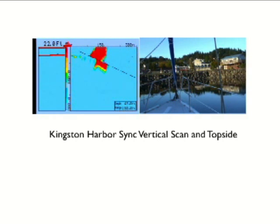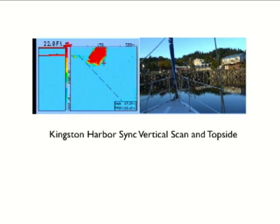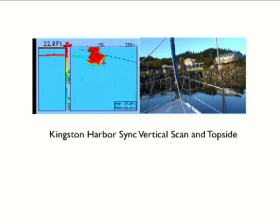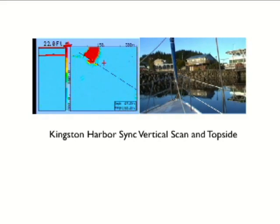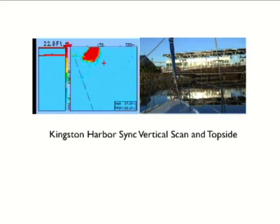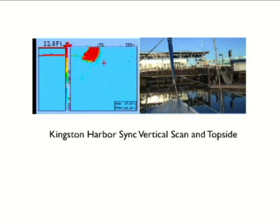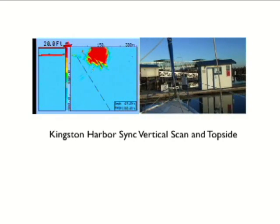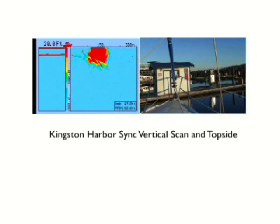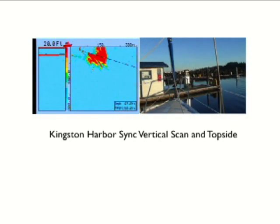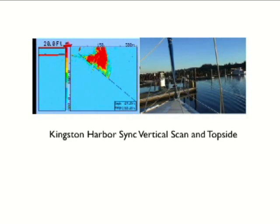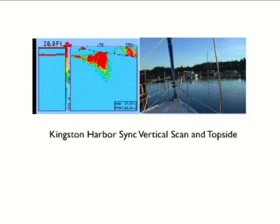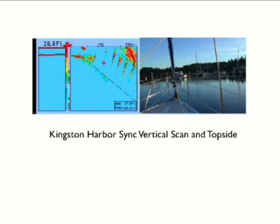We're getting closer and closer, and pretty soon we're going to turn. We'll see what that looks like on vertical scan with a higher gain — I really shouldn't call this high gain, it's just a higher gain than the other vertical scan demonstration. Now, of course, we're turning — you see that rainbow effect, characteristic of that. We're still turning, and now we're heading up the channel 180 degrees. This is Kingston on vertical scan at a higher setting.